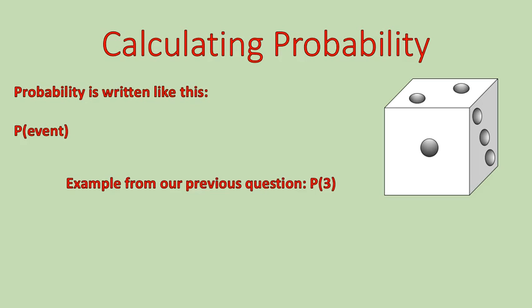The event that you are looking for, how many times that happens, that's going to go in the numerator. So in our previous example, we would write it like this. P parentheses 3. That's the probability of rolling a 3. That means how many times we're going to roll a 3, the probability of actually rolling a 3. And that number, as we said in the previous question, is 1. There is one 3. So that number will be in the numerator and the total possible outcomes will be in the denominator.